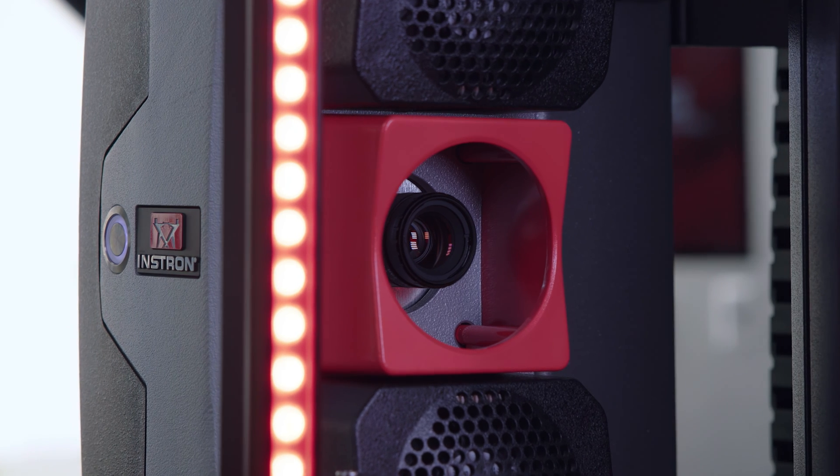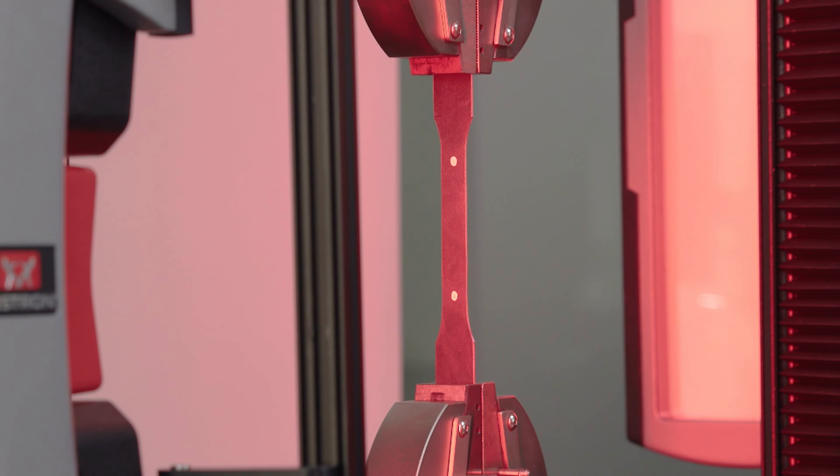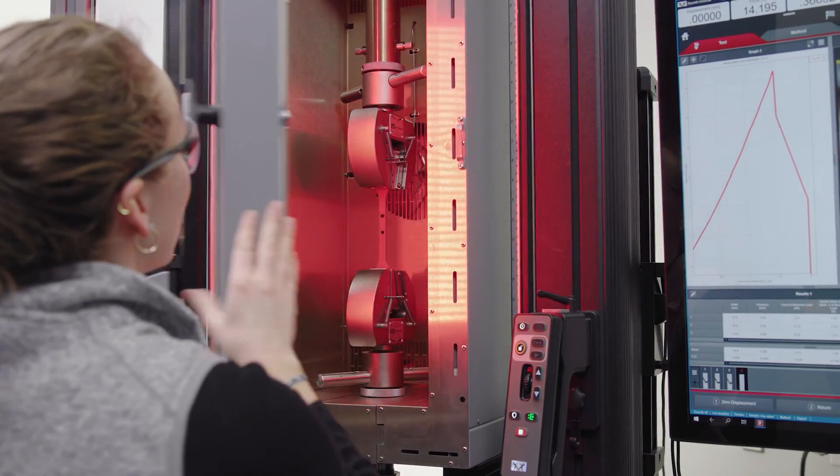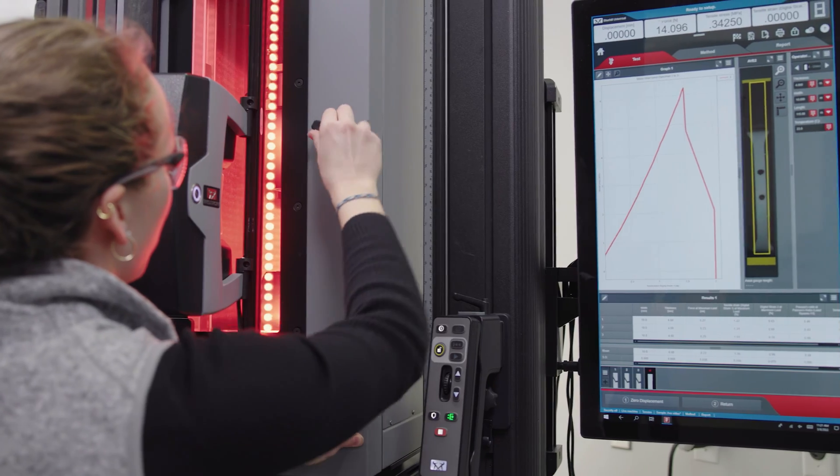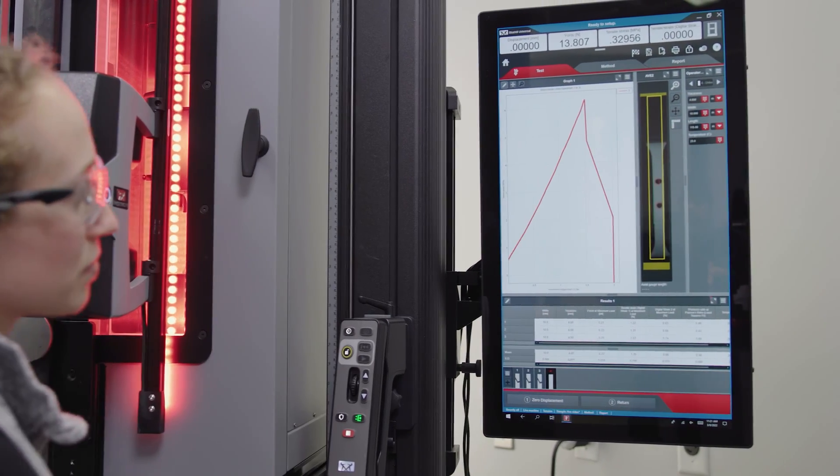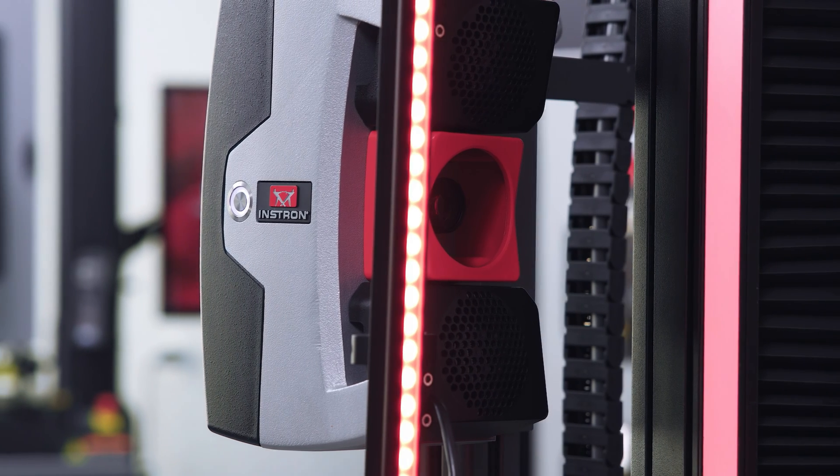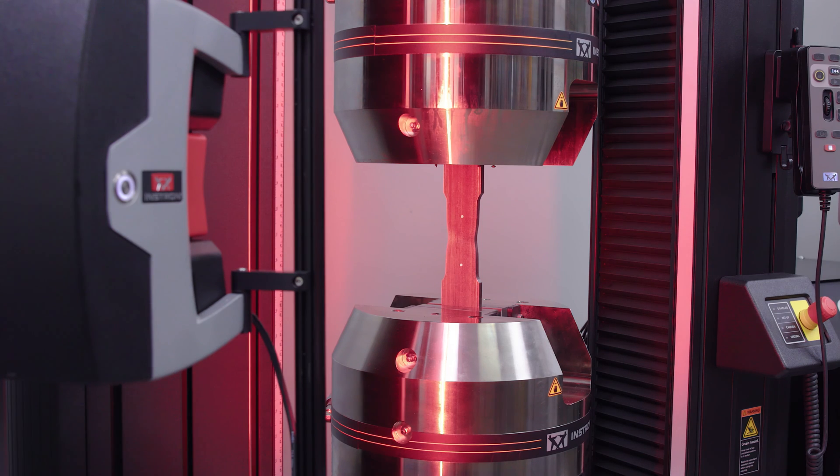Non-contacting extensometers measure strain optically without the need to touch the specimen or enter the test space and are also ideal for measuring strain on materials being tested at high or low temperatures inside a chamber. Video extensometers are considered the premium solution for strain measurement in the materials testing industry.